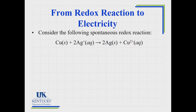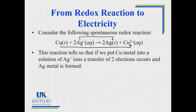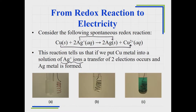This is a very typical redox reaction. The copper is losing electrons, so it is oxidized. The silver is gaining those electrons, and there are two electrons transferred in this reaction. If we took a piece of copper metal and placed it into a solution of silver ions, this reaction would occur right at the interface between the two items.